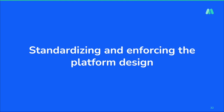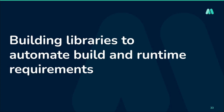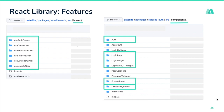That ends the first section. The second important part is standardizing and enforcing the platform design for upcoming and existing applications. The first step was to build libraries for build and runtime to reduce repetitive effort, ease operations, and enforce design. We created a React library — since all front-end apps are React-based SPAs — that exposes hooks and components. All identity-related front-end operations fall into authentication, user management (create, remove, update a user), or lifecycle changes like forgot password and change password.